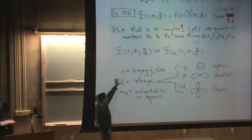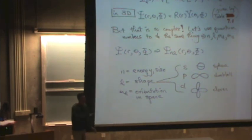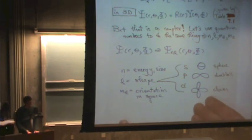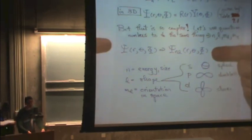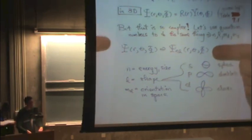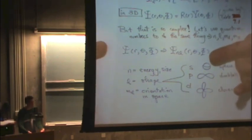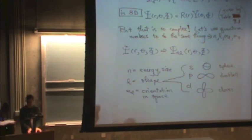The n tells us the energy and size, l tells us the shape, and m sub l the orientation in space. So we're going to use quantum numbers to plot the wave function. We're going to use quantum numbers to draw out the wave function instead of attempting to plot it. That's the general concept from last time.